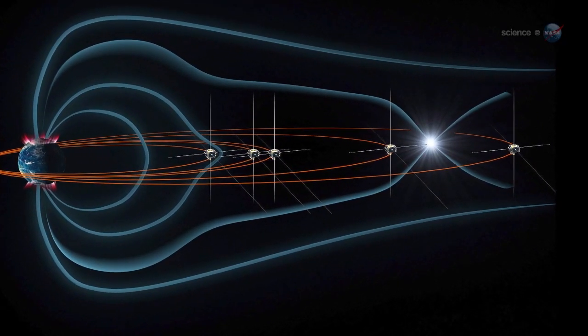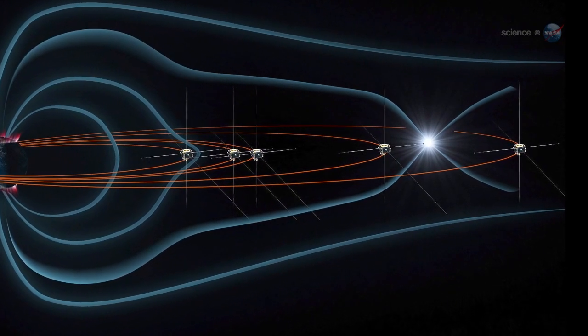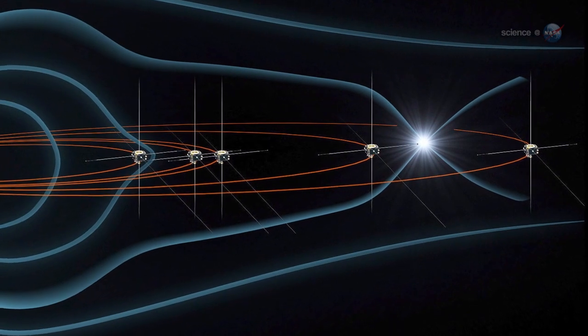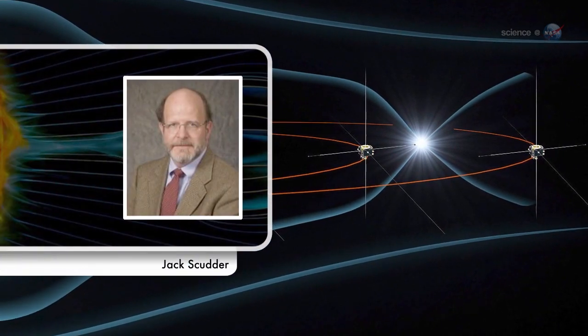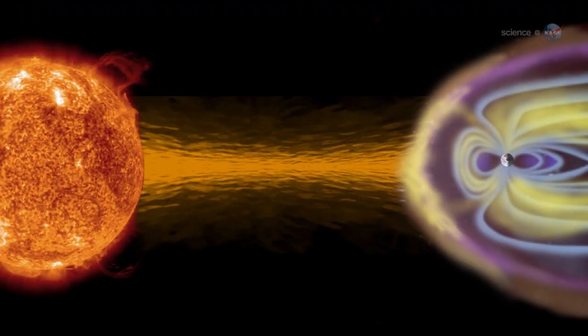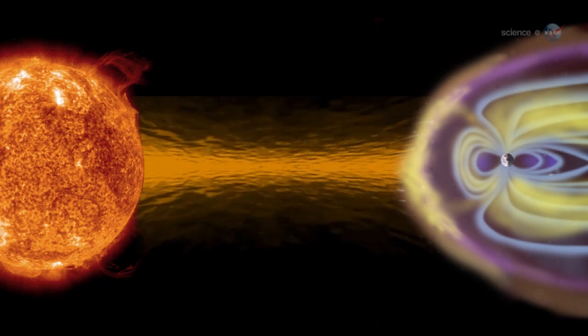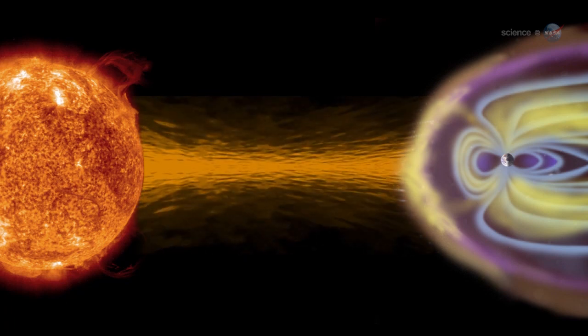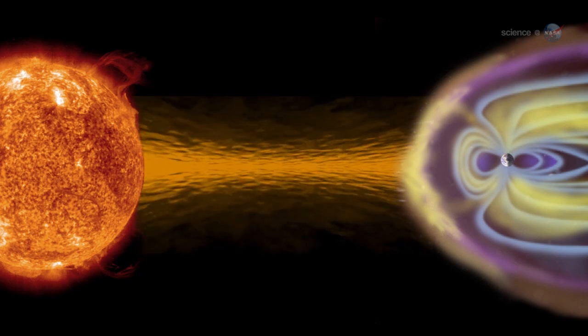And a NASA-funded researcher at the University of Iowa has figured out how to find them. We call them X-points, or electron diffusion regions, explains plasma physicist Jack Scudder of the University of Iowa. They're places where the magnetic field of Earth connects to the magnetic field of the Sun, creating an uninterrupted path leading from our own planet to the Sun's atmosphere 93 million miles away.